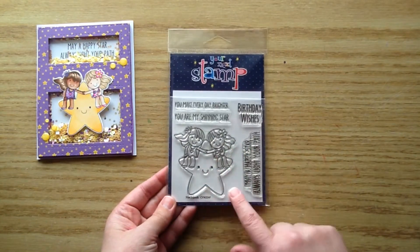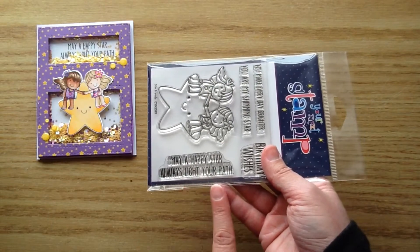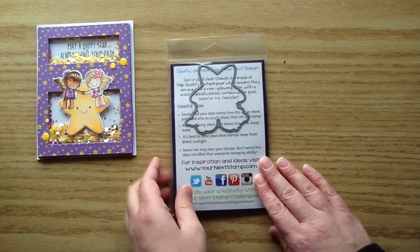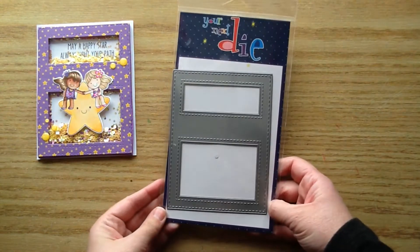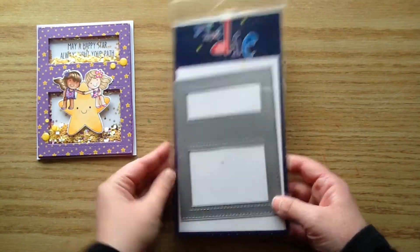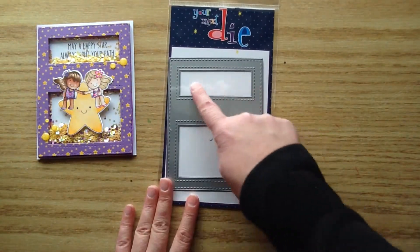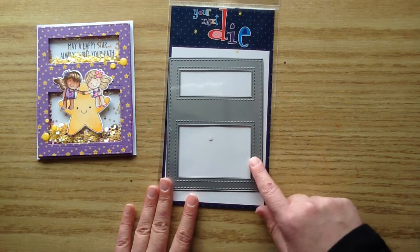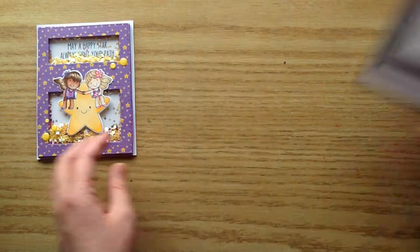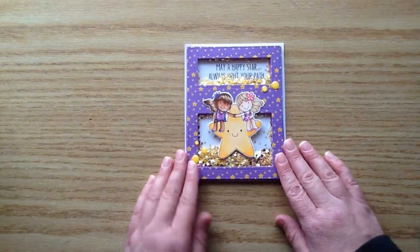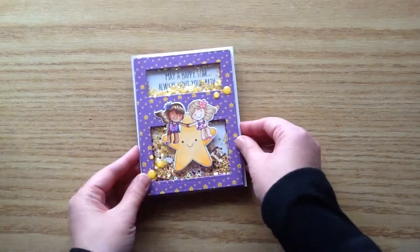I also used this stamp set. This is called Star Friends and I used the sentiment that says may a happy star always light your path. I used the coordinating die to trim that out. Then for the shaker component and the backgrounds for the card, I used this window panel die and I love this so much. I just trimmed out one piece of cardstock with this and I was able to make a really cute shaker card and it gave two separate little spots for the shaker components to shake about. So I'm just going to show you up close and you can see the little shaker bits.